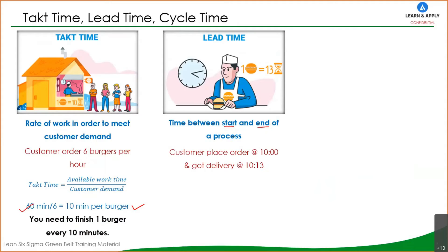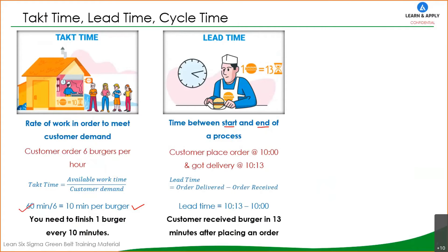For example, a customer places an order at exactly 10 o'clock and gets delivery at 10:13. The lead time is order delivered minus order received — 10:13 minus 10:00, which is 13 minutes. So the customer received the burger 13 minutes after placing the order. This is the lead time.